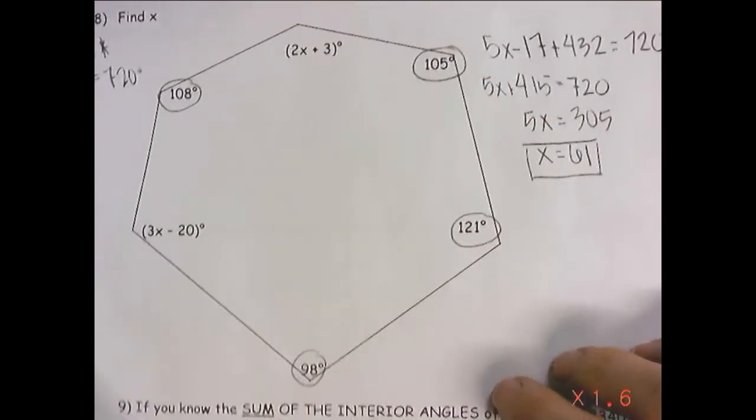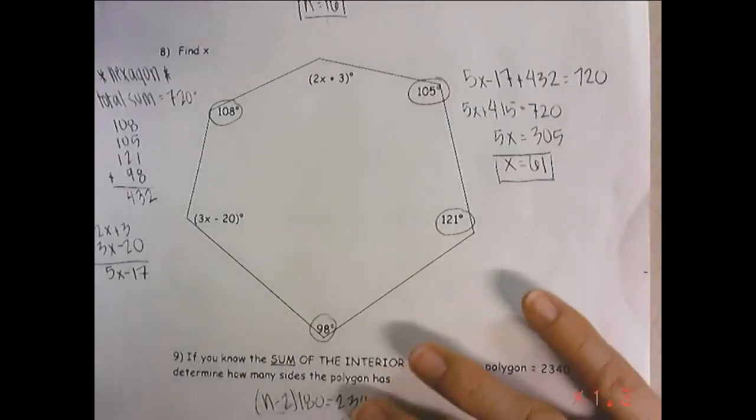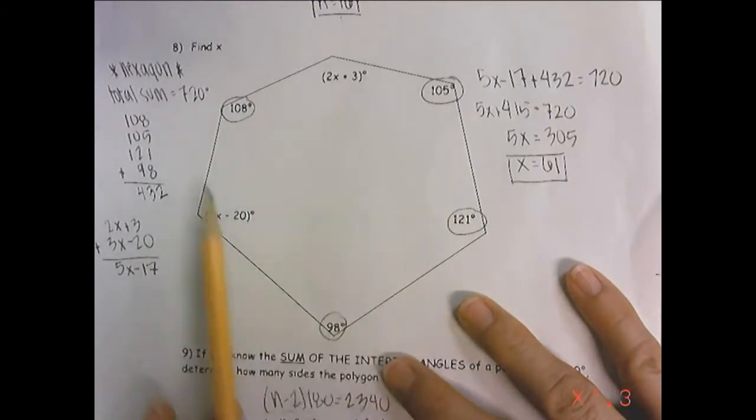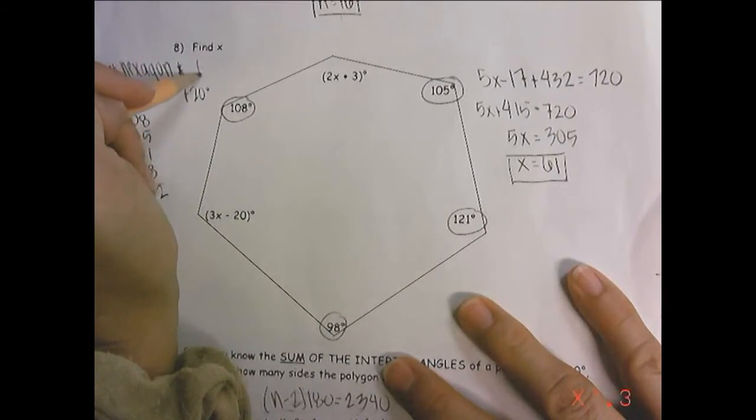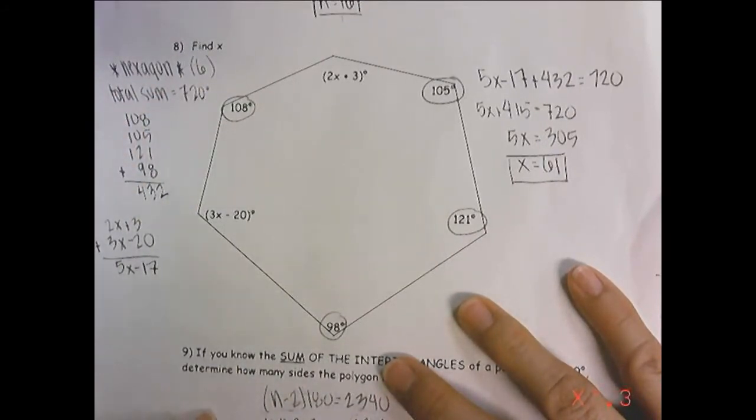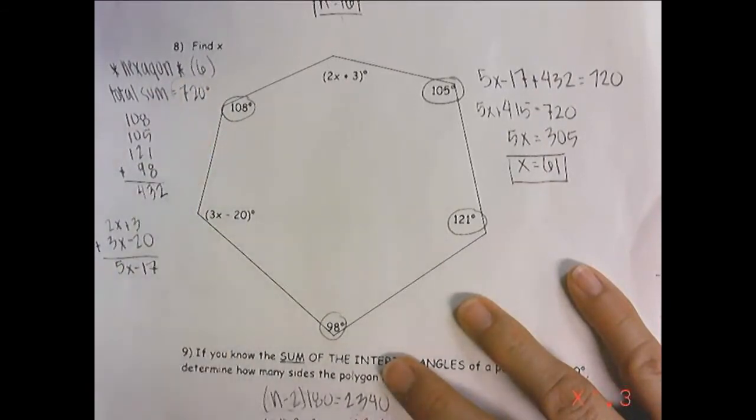This one, things get a little bit more confusing because what you want to do is you want to figure out how many sides this has. And it's a hexagon, which means it has six sides. So, what I went ahead and did is I found the total measure of angles of a hexagon.